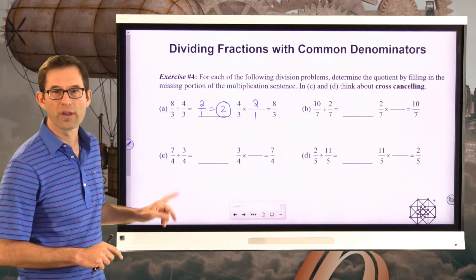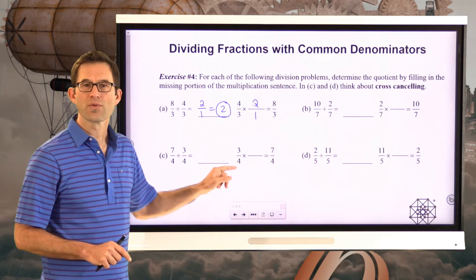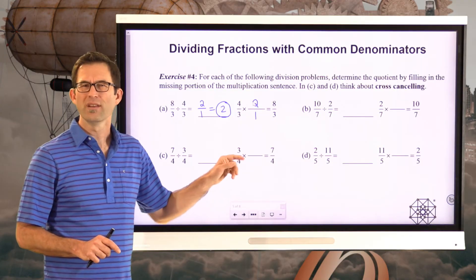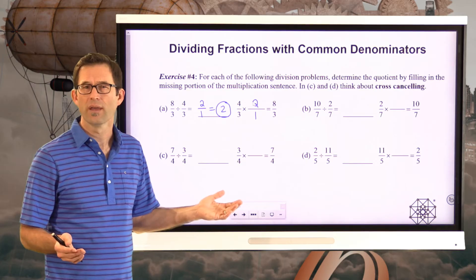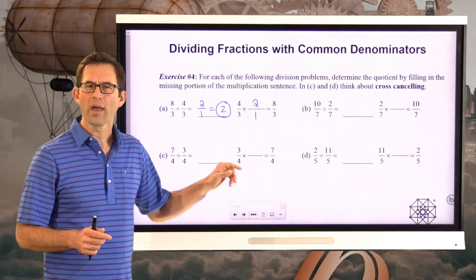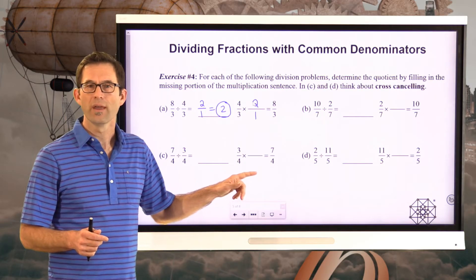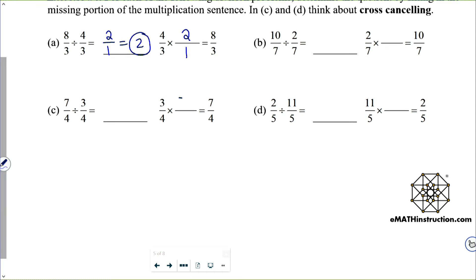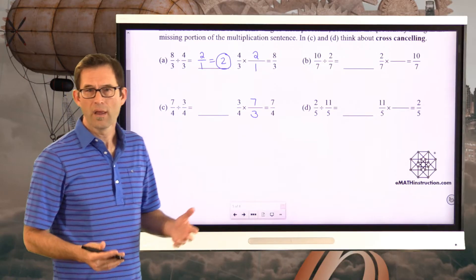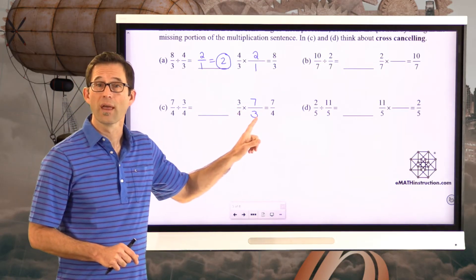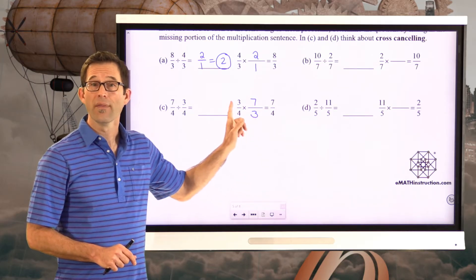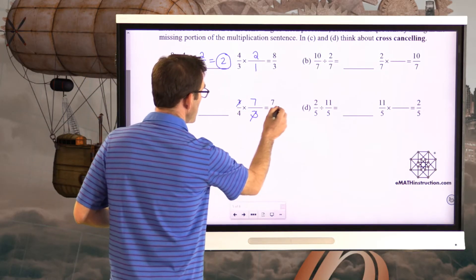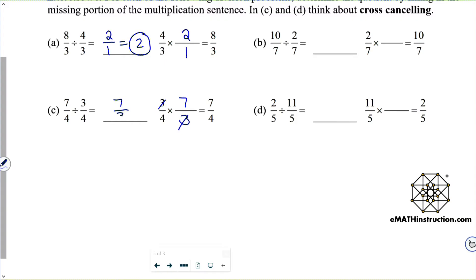Let's look at letter C — this is a little bit trickier. 7 fourths divided by 3 fourths: that's 3 fourths times what equals 7 fourths? Even though 4 times 1 is 4, 3 times something must give 7. Thinking about cross-canceling: I'd need 7 thirds. When you multiply 3 fourths by 7 thirds, the 3 and 3 would cancel, leaving 1 and 1, and then 1 times 7 is 7, 1 times 4 is 4 — giving 7 fourths. So the answer is 7 thirds.